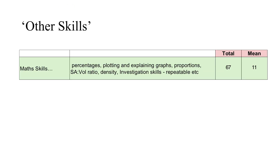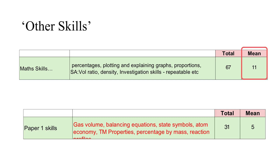Each year, paper two assesses some things not taught directly as part of the topics. Math skills award on average 11 marks per year — things like calculating percentages, plotting and explaining graphs, working with proportions, surface area to volume ratio, density, or general investigative skills such as repeatability and reliability. Additionally, topics that could have been assessed on paper one but were not — such as gas volumes, balancing equations, state symbols, atom economy, transition metal properties, percentage by mass, and reaction profiles — can come up on paper two, worth around five marks each year on average.